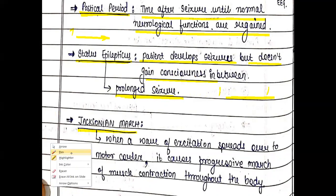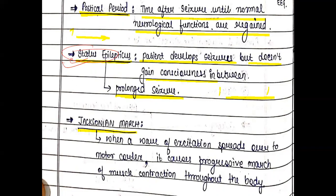Status epilepticus is a very dangerous condition — it is a medical emergency. Why? Because there is a chance that either death will occur or there may be permanent brain damage. This is why status epilepticus should be urgently treated. When a doctor is managing status epilepticus, drugs are given intravenously. Remember, no good doctor should stay at the bedside of a patient with status epilepticus for more than 20 minutes without the help of a general anesthetic — general anesthesia should be administered so the patient can recover.